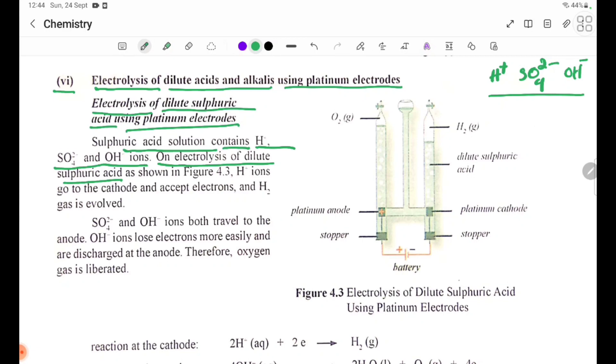As a result of dilute acid electrolysis, H plus ions go to the cathode, accept electrons, and hydrogen gas is evolved. H plus ions at the cathode form hydrogen gas.